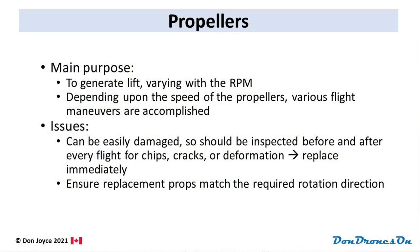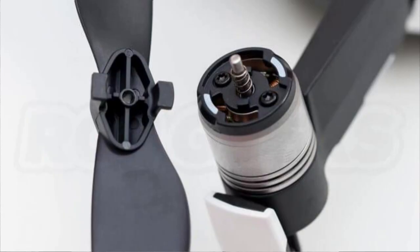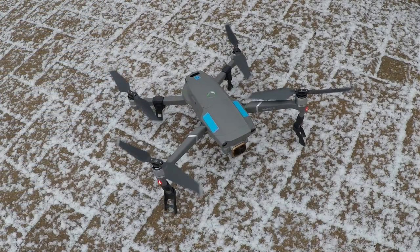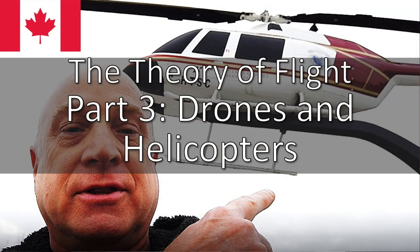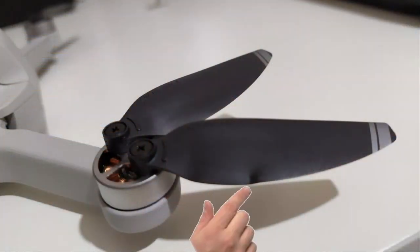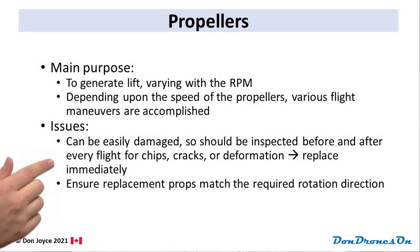Propellers. In the standard brushless outrunner motor design, the propellers are attached to the outer part of the motor, the part that spins. The propellers are counter-rotating — two clockwise and two counterclockwise — to cancel out the torque. A pattern of RPMs across the various props will determine the kind of maneuver performed by the drone. Before and after every flight, carefully examine your propellers for chips, cracks or deformation. These are probably the cheapest replaceable part on your drone, and what ultimately keeps it in the air. Replace damaged or worn propellers immediately, and be sure to match the required direction of rotation.